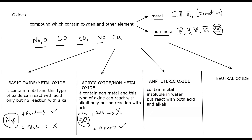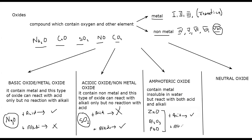There are more amphoteric oxides, but in your course outline you should know the names of three amphoteric oxides. What are the three amphoteric oxides? Zinc oxide, aluminium oxide, and lead oxide. You have to learn these oxides which are amphoteric. Amphoteric oxide means if I add an acid to them, they will react, and if I add an alkali, it will also react.